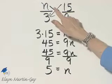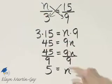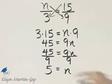So the value of n that makes this a true statement is 5. You can check by replacing n with 5 and seeing that a true proportion results.